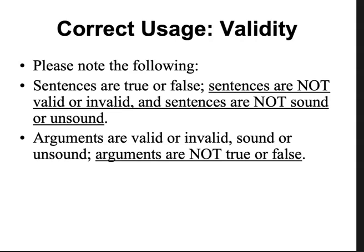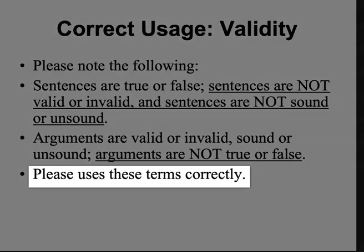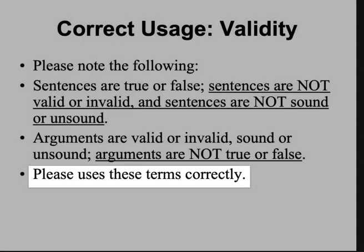Arguments are valid or invalid, sound or unsound. Arguments are not true or false. The way to think about validity and soundness is they're properties of arguments, and keeping these terms straight is very helpful.